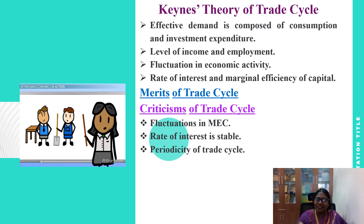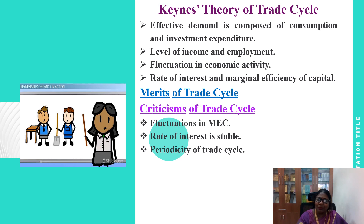As the process of expansion continues, cost of production increases due to scarcity of factors of production. This will lead to a fall in marginal efficiency of capital. Further, the price of products falls due to abundant supply, leading to a decline in profits. This leads to depression.